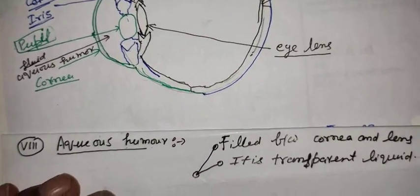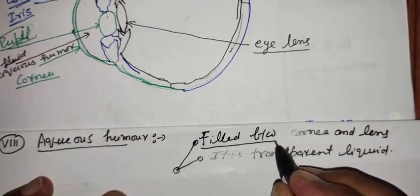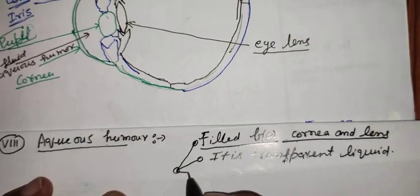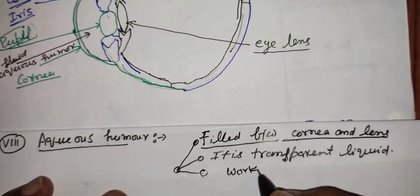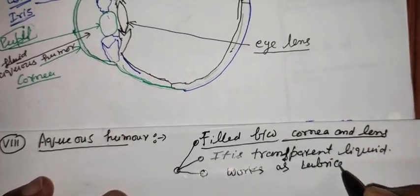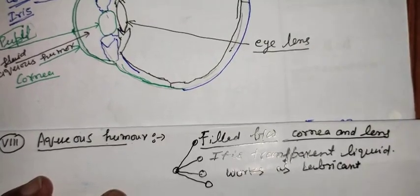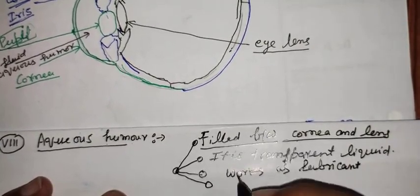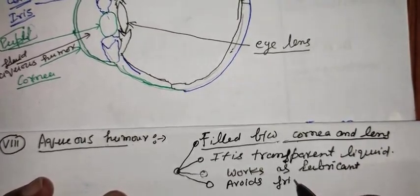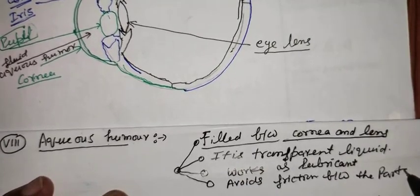We may say that aqueous humor is filled between the cornea and the lens. It is a transparent liquid that works as a lubricant, protecting the vital parts by avoiding friction between them.